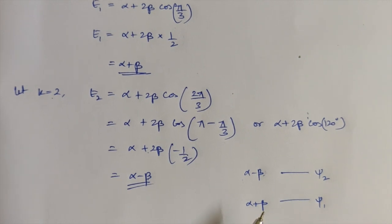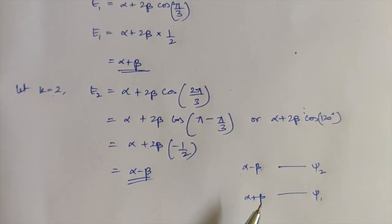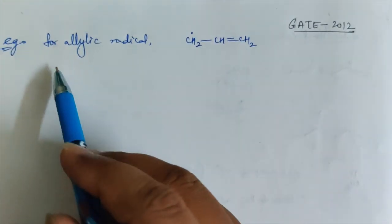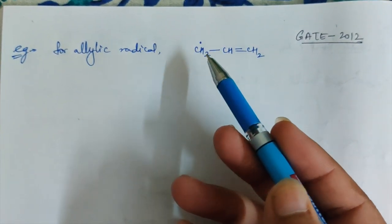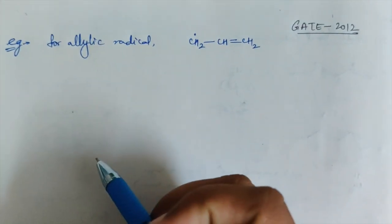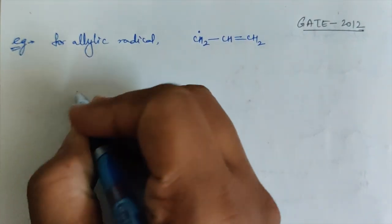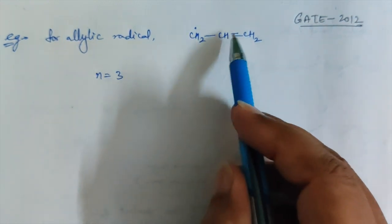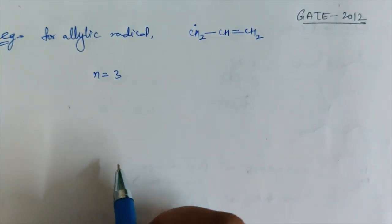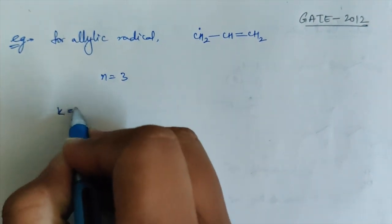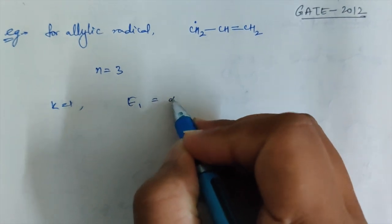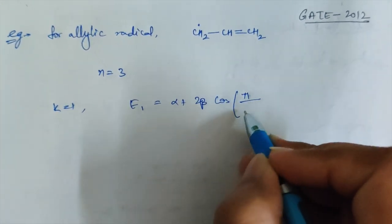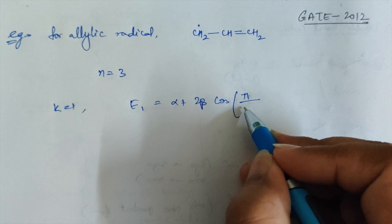Now let's take one more example to understand in more detail. There was a question asked in GATE 2012 about the allylic radical. The allylic radical has three carbon atoms, so N = 3. For K = 1: E₁ = α + 2β cos(π/4). Cos(π/4) = cos 45° = 1/√2, so E₁ = α + 2β × (1/√2) = α + √2β.